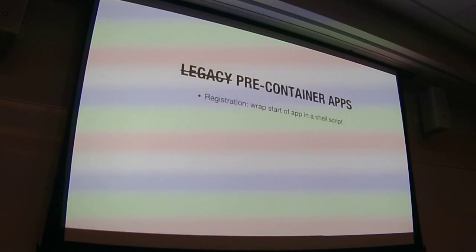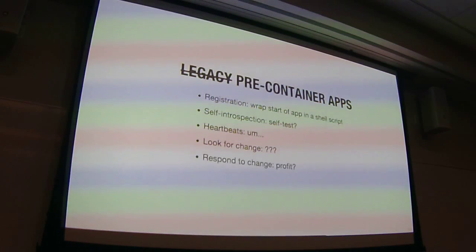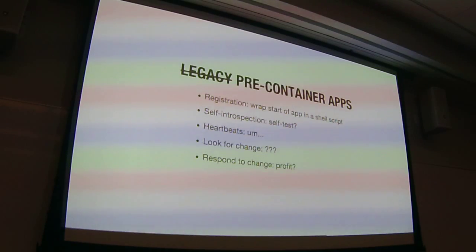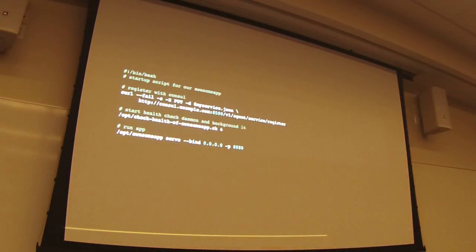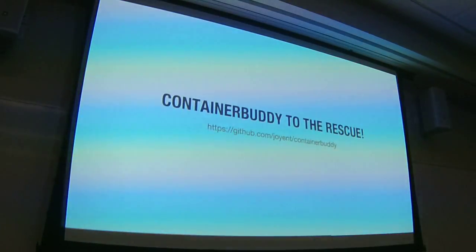Let's look at those responsibilities one more time. Registration: we can totally do that — just wrap the start of the app in a shell script, it'll register. Self-introspection and health checking: this is actually not so easy. You might say we need a second process in the container, which requires supervision. I've seen this seriously proposed: push the registration to Consul, start a health check script, background it, then run the app. But anybody who's done any systems work knows: what happens when that health check script dies unexpectedly? You're no longer getting health checked. Don't do that.